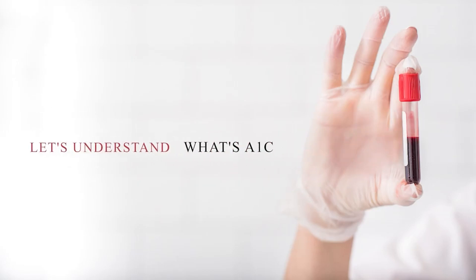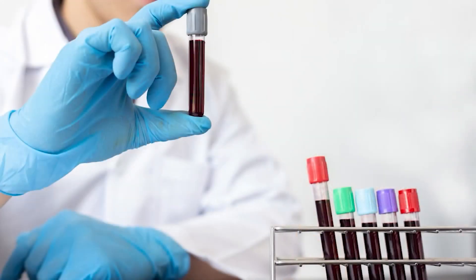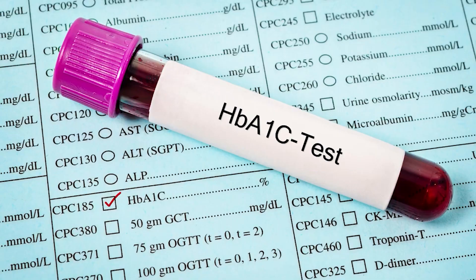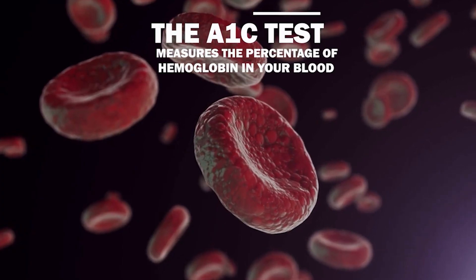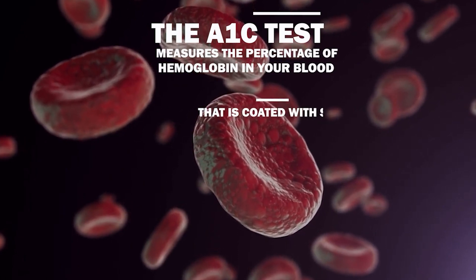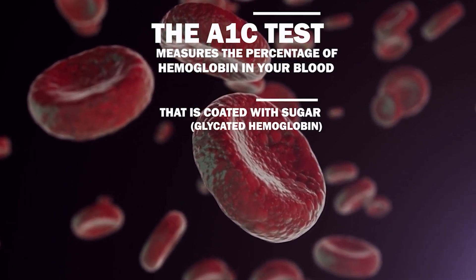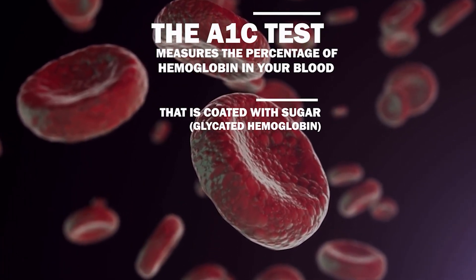A1C is a blood test that measures your average blood sugar levels over the past three months. It basically gives an overall picture of how a patient is managing his diabetes. We use this test to diagnose diabetes and also to monitor its treatment. The A1C test measures the percentage of hemoglobin in your blood that is coated with sugar — we call this glycated hemoglobin.